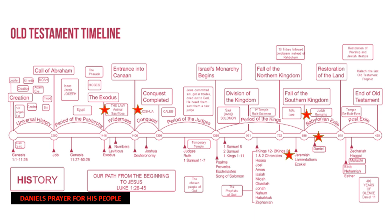God would send them prophets — Jeremiah was one of the last before they went into captivity. Every prophet was sent to turn the people back from their sinful ways and come back to God. That is the message of every prophet God would send. Daniel, the next prophet on the scene, is the one we are studying today, as his people are now in captivity at the hands of the Babylonians.